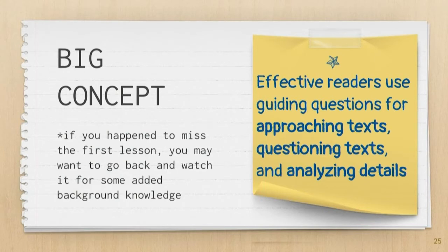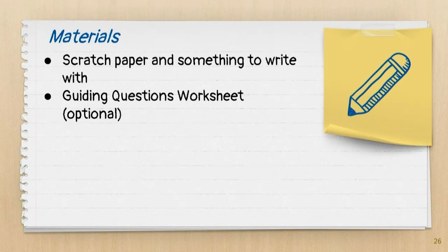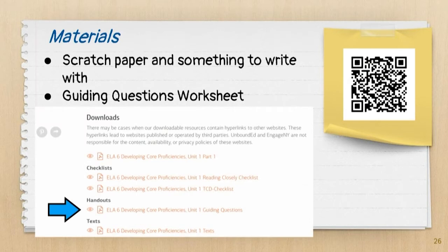The big concept is that effective readers use questioning that guides them when they approach the text, question the text, and analyze for details. Some materials that would be helpful: some scratch paper or something to write with, and this guiding question worksheet. You can use the QR code to quickly scan, access the document, and once you pull up that site, scroll down to where it says Handouts. This is going to be a great resource not just for today's lesson, but for future work when dealing with analyzing text and close reading.